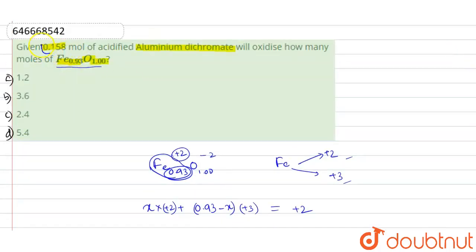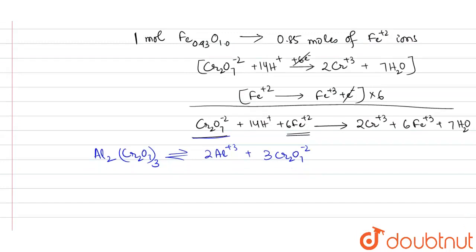So the amount of Cr₂O₇²⁻ ions is equal to 3 into 0.158 moles, which will be equal to 0.468 moles.